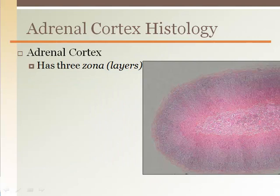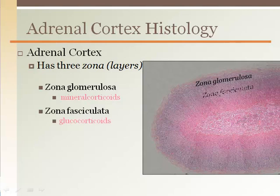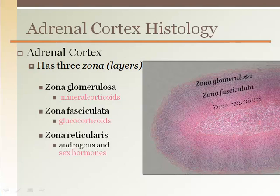The adrenal cortex has three distinct layers called zona. From the outermost layer, there is the zona glomerulosa, zona fasciculata, and zona reticularis.